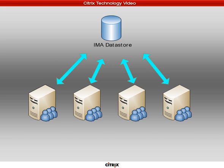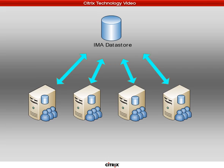Fortunately, Citrix thought of this when they architected the Presentation Server product. There's actually a component that Citrix calls the Local Host Cache. The Local Host Cache is a subset of the centralized configuration database that is stored locally — cached — on each individual Citrix Presentation Server. Each Presentation Server is able to interact with its own Local Host Cache, and only updates the cache from the centralized database as needed. In the event of a centralized configuration database failure, your Citrix server farm will continue to function indefinitely.